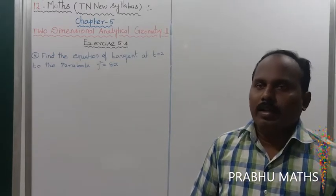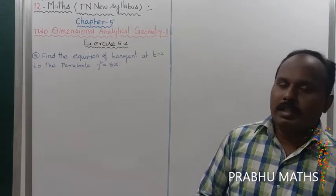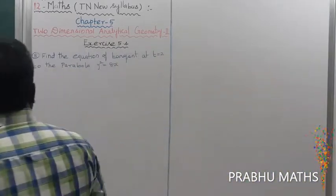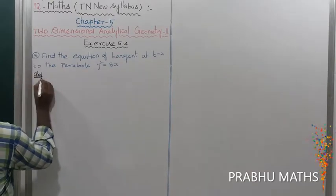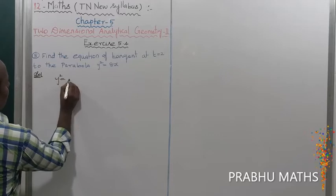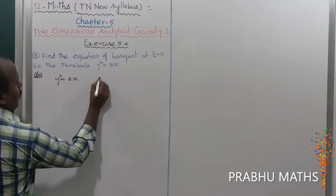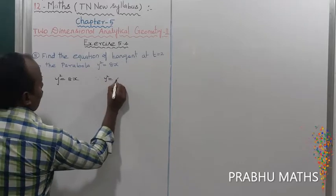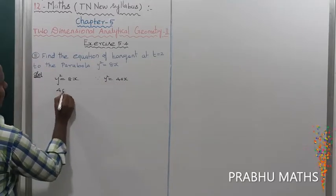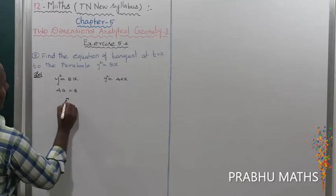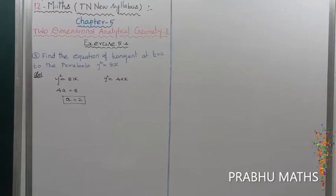To find the value of a, compare with the given parabola. The given parabola is y squared equal to 8x. Since y squared equal to 4ax, we get 4a equal to 8, so a is equal to 2. Also, t is equal to 2 as directly given.